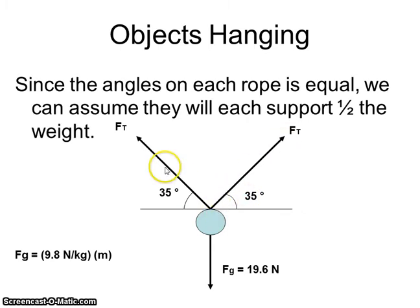Now, since those are at equal angles, we can assume that each one is going to support half the weight. So if the total downforce is 19.6, the total upforce has to be 19.6. But since we have two strands, each one will support half of that 19.6.